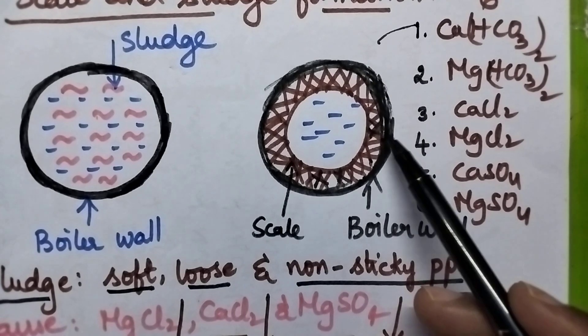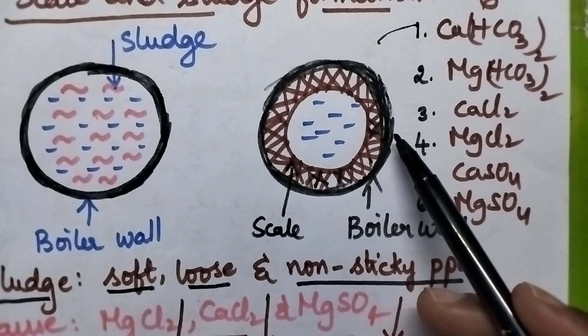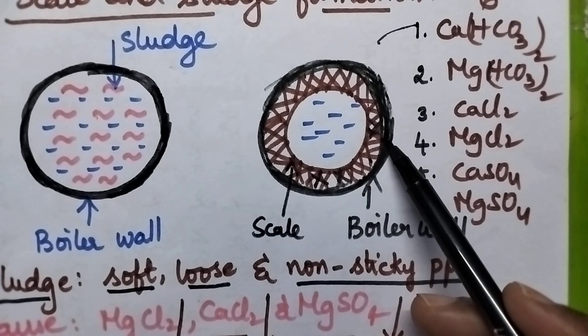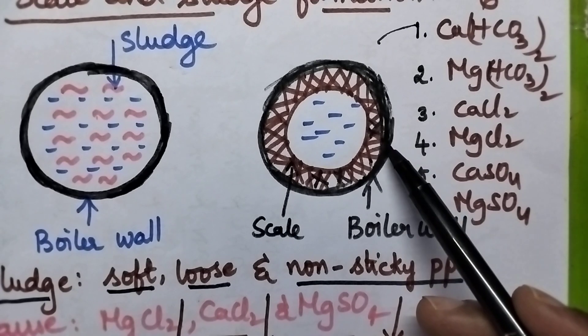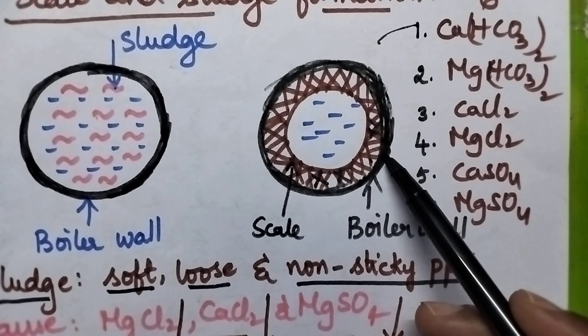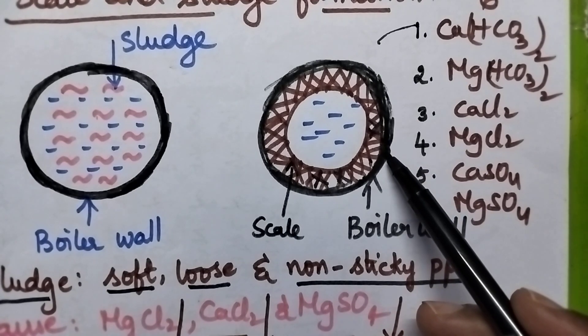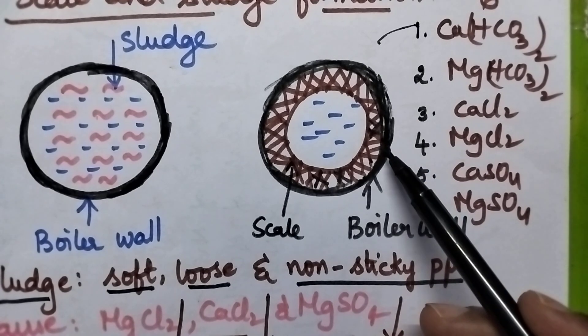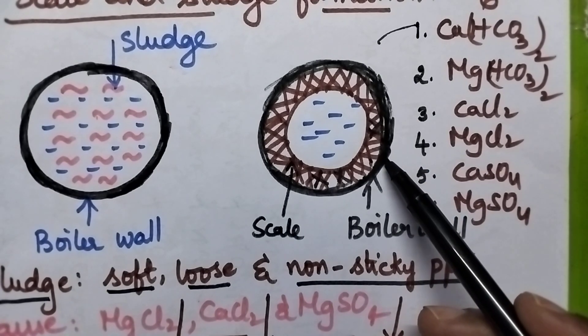Scale decreases the efficiency of the boiler, sometimes causes damage to the boiler, and also causes wastage of fuel.